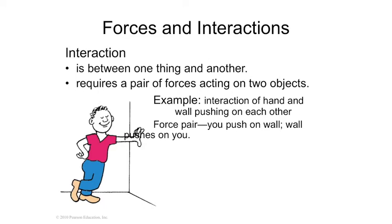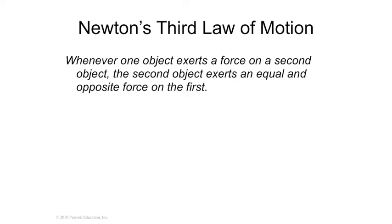So if you push a basketball with your hand to accelerate it, you're also being shoved back by the ball. The ball is exerting a force on your hand equal to the force your hand is exerting on the ball. Newton expressed this in his third law: whenever an object exerts a force on a second object, the second object exerts an equal and opposite force on the first.